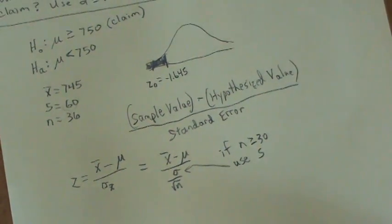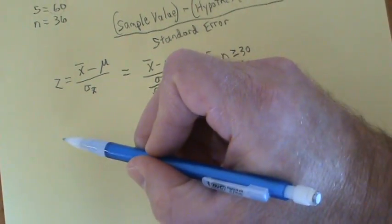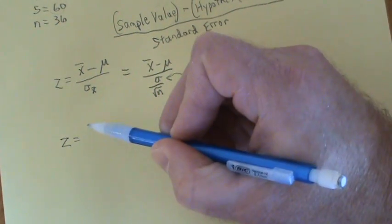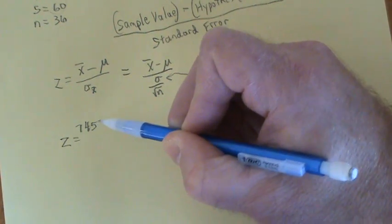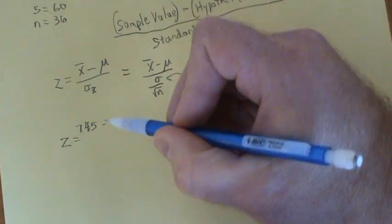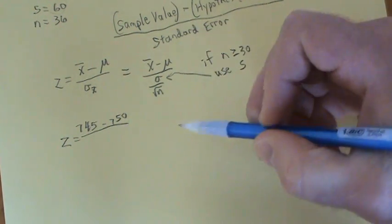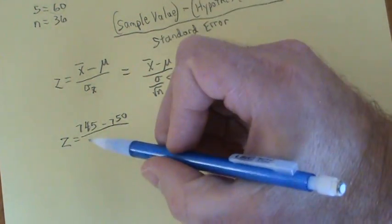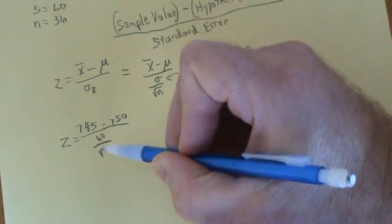Okay, so here we go. If we plug in these values—shift this up a little bit here—if we plug in the value, z equals x̄ was 745 minus the hypothesized value was 750, divided by our s sample standard deviation was 60, divided by the square root of n. N was 36.